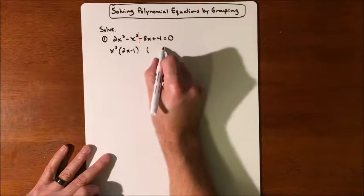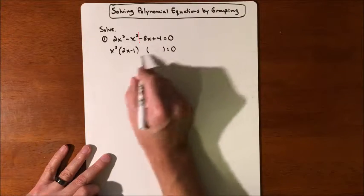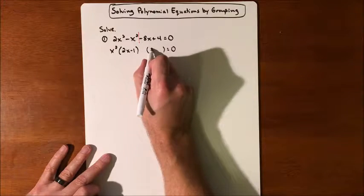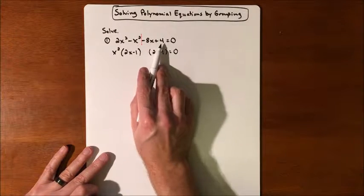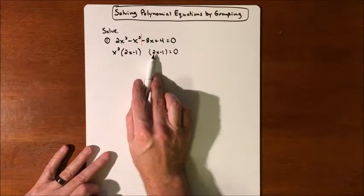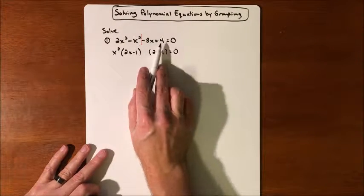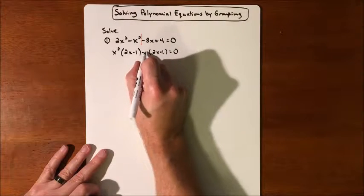And in order for factor by grouping to work, we're going to try and get another 2x minus 1. So what can we factor out of a negative 8x and a positive 4 to get a positive 2x and a negative 1? So we could factor out a negative 4.